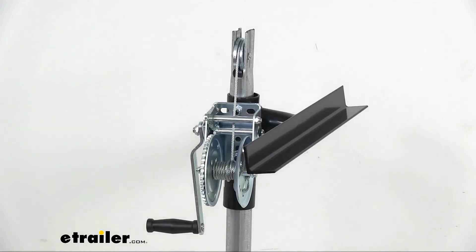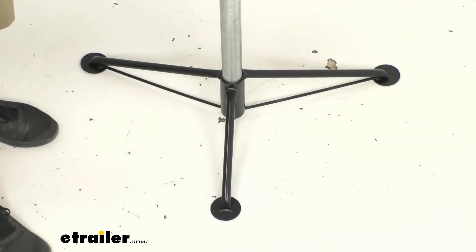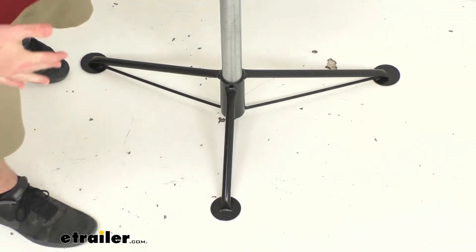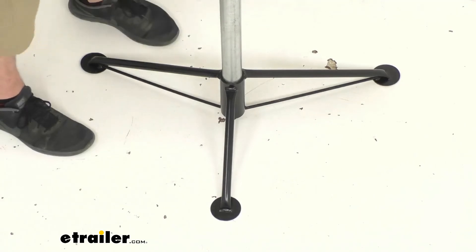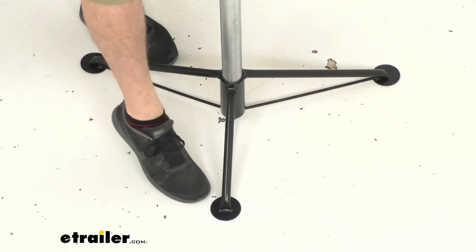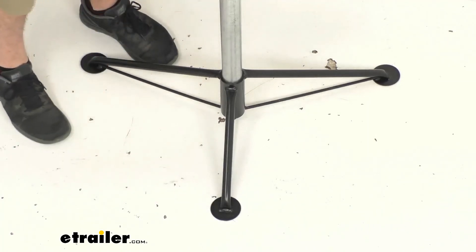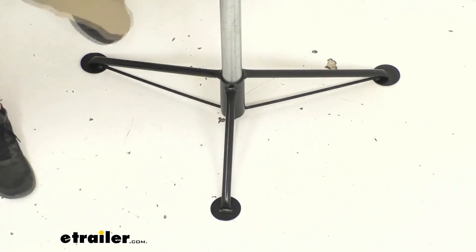The tripod base is going to give us some extra width here. So it's going to just evenly distribute the camper's weight, help eliminate that front to back and side to side motion. You can see we have the large foot plates there that are going to help prevent this from sinking and tilting. But of course you always want to make sure that you're going to be using this on level ground.